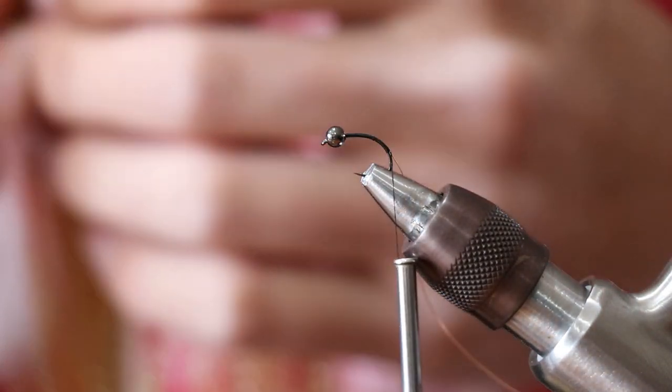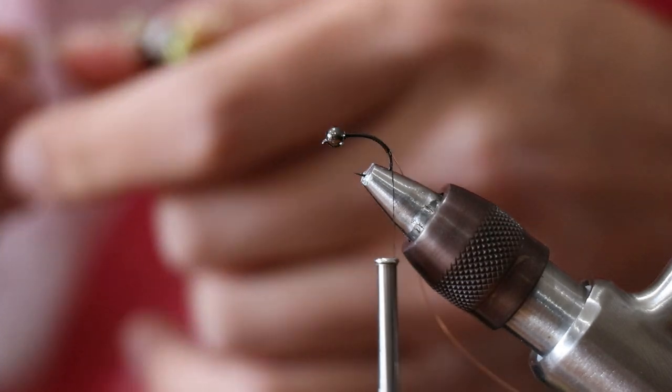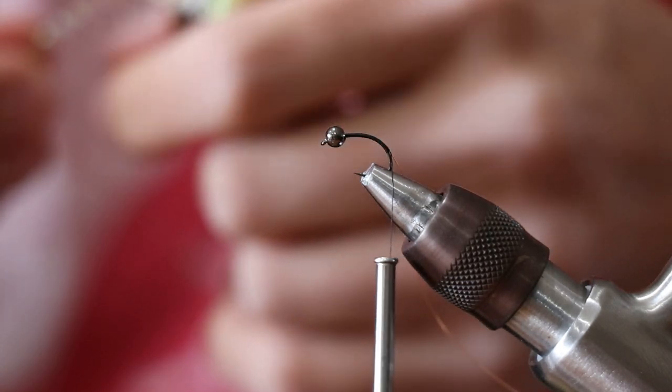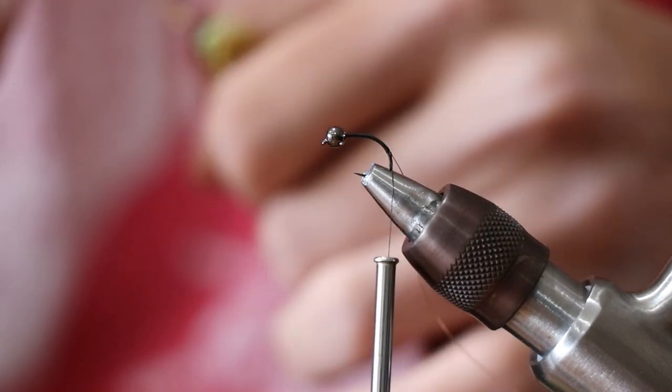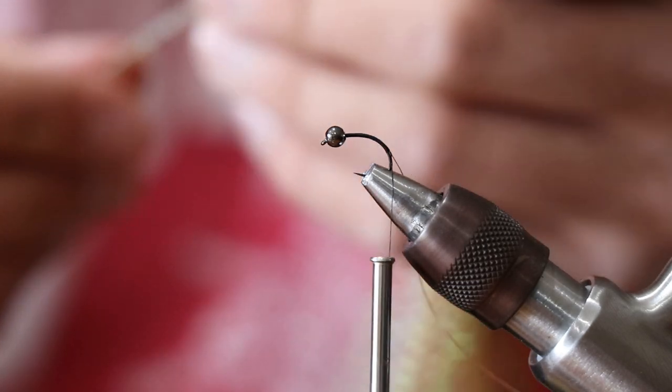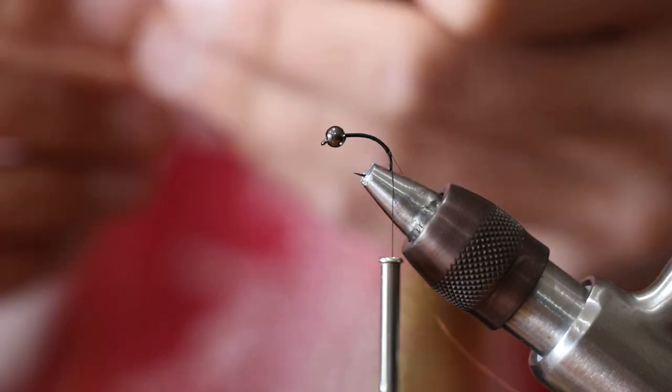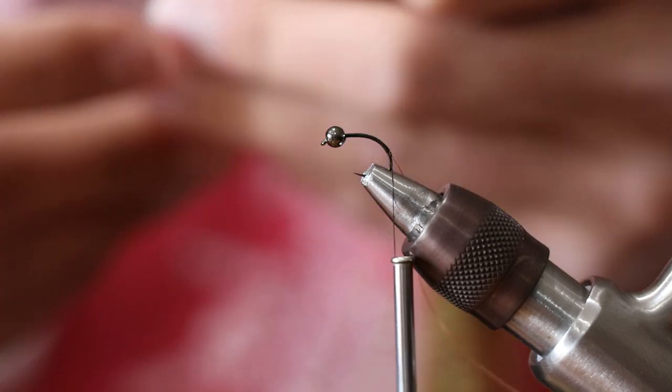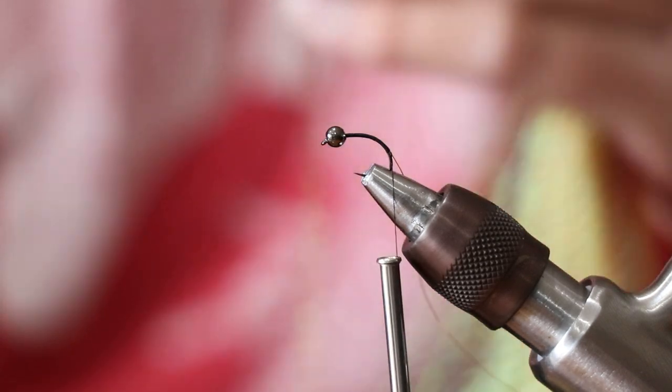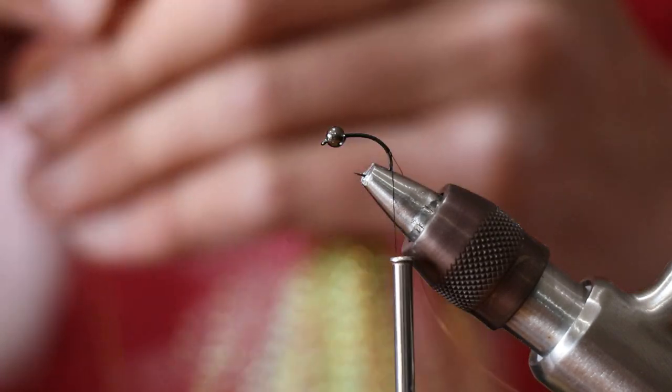Next we're going to go with our flash, which is actually going to act as the shell or case right on top. I'm just using some crystal flash in a root beer color, but you can play around with the colors for sure. I'm going to grab anywhere between five to seven strands of that.